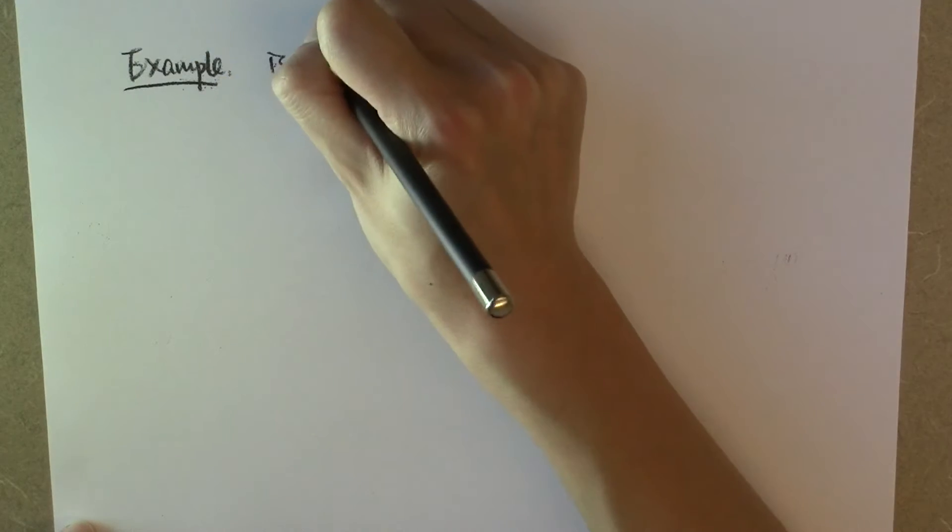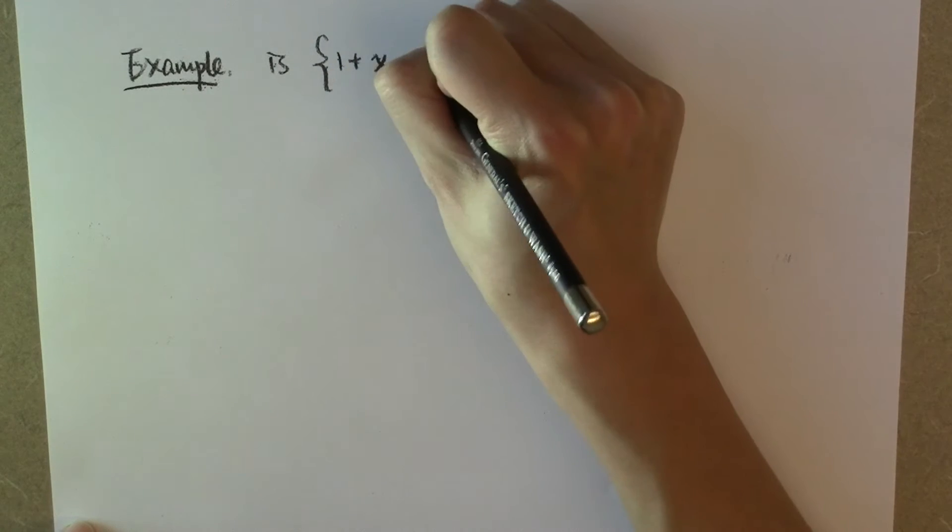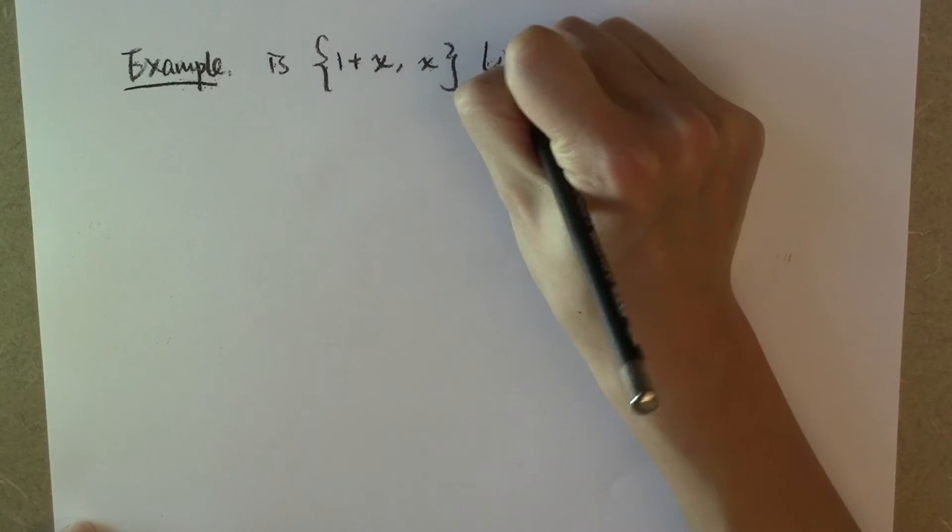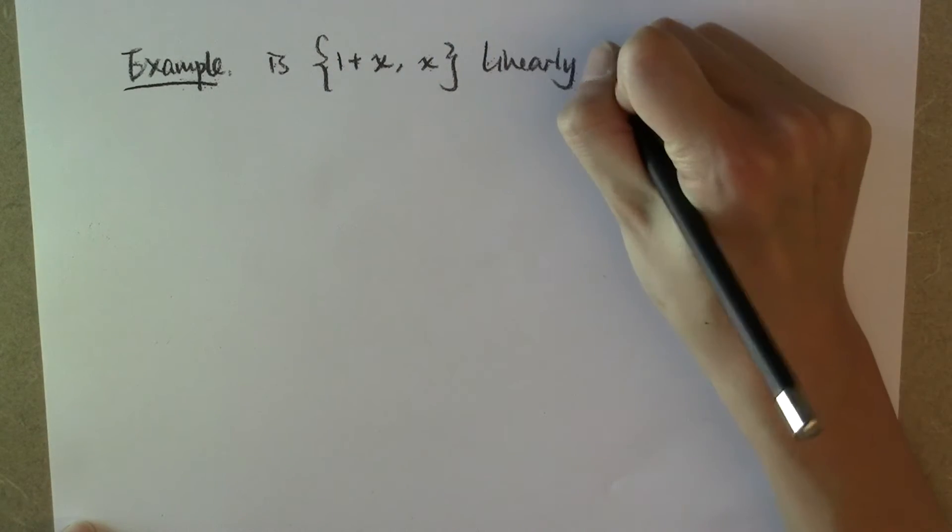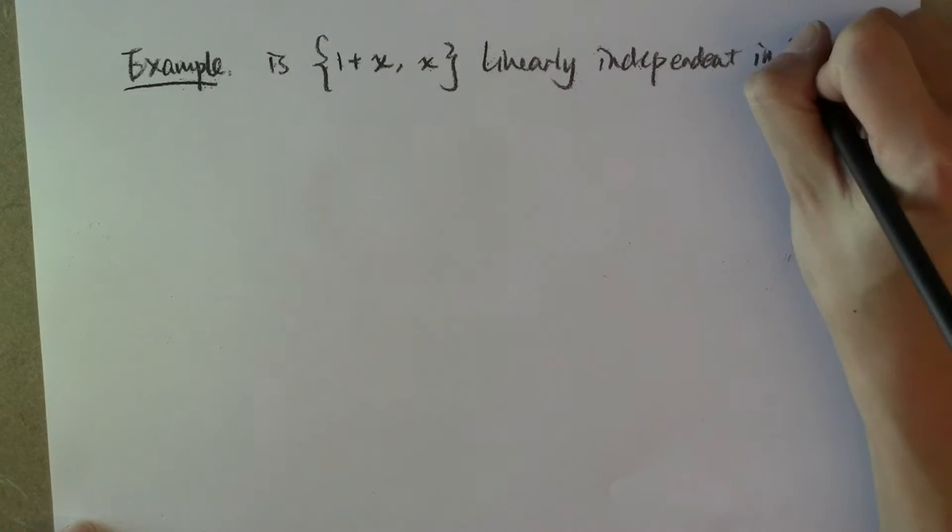For example, is this set of polynomials, 1 plus x and x, linearly independent or dependent in the vector space P2?